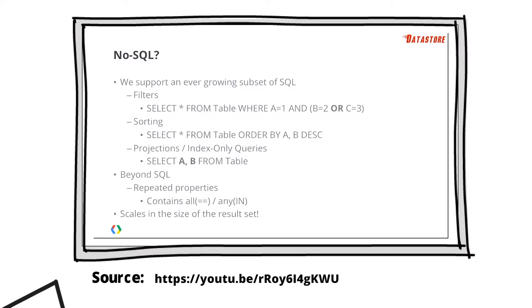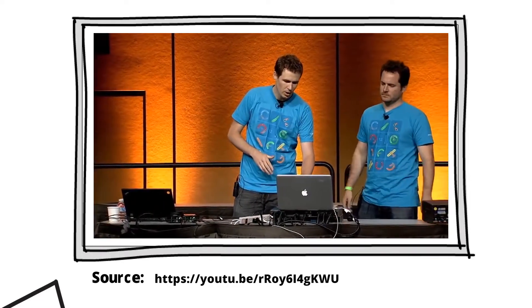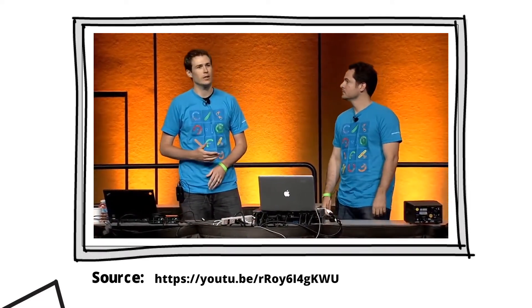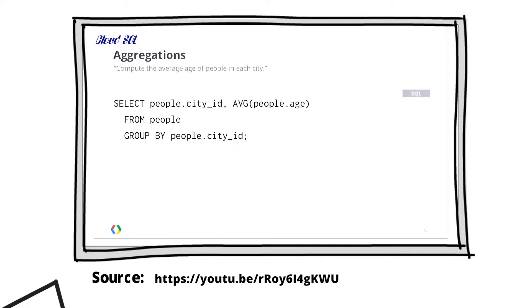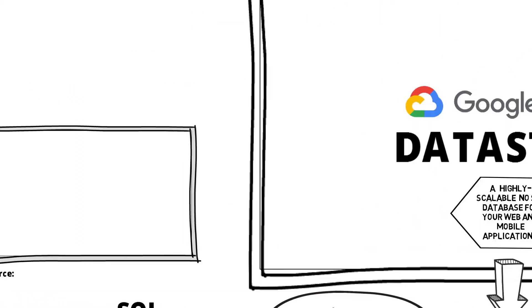In Cloud SQL we support all of those SQL queries and more — including powerful aggregations. For example, to compute the average age of people living in each city, in Cloud SQL you simply select the average age and group by city.